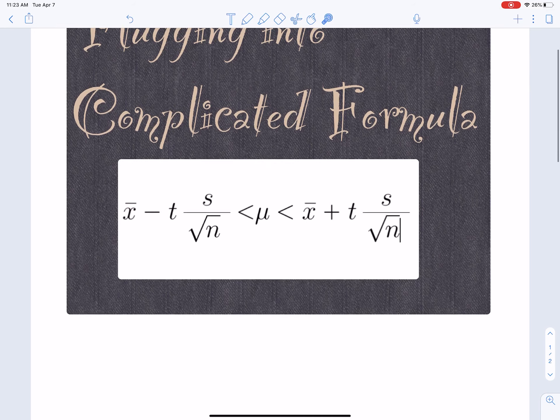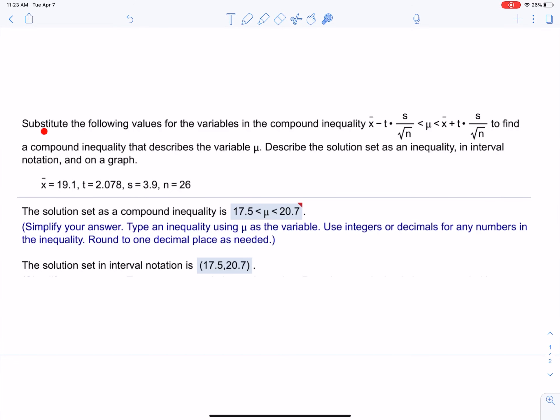Here's the question: substitute the following values for the variables in the compound inequality to find a compound inequality that describes the variable μ. Describe the solution set as an inequality, in interval notation, and on a graph. Alright, so let's try this. Here are the values that we're supposed to plug in.